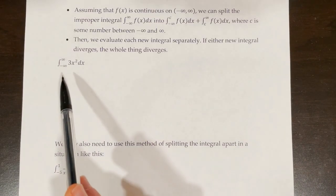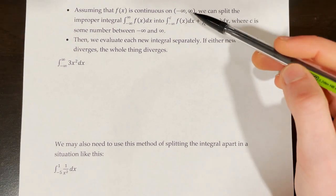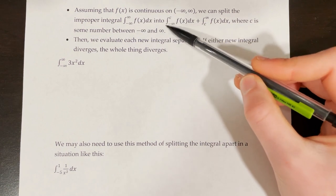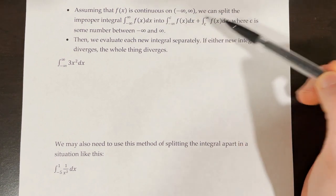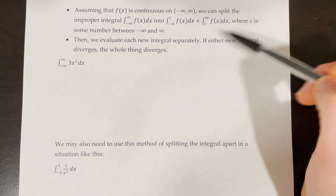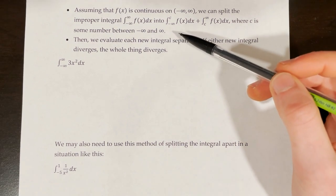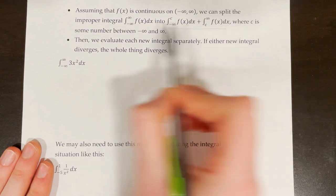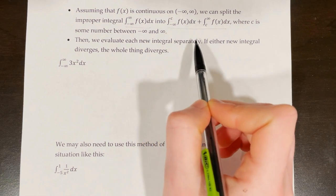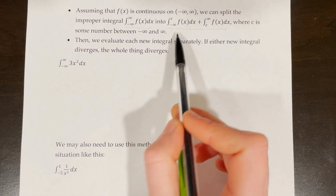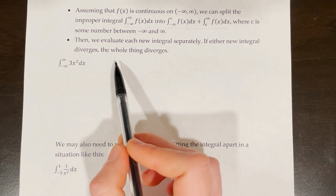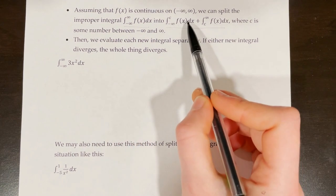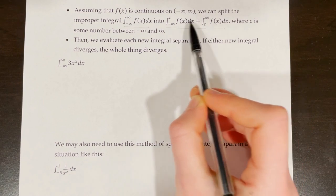Now we'll talk about what to do if both the lower bound and upper bound are infinite. Assuming f of x is continuous on negative infinity to infinity, we can split the improper integral from negative infinity to infinity of f of x dx into the integral from negative infinity to c plus the integral from c to infinity of f of x dx, where c is any constant — typically 0 or 1. We evaluate each new integral separately. If either of the new integrals diverges, then the whole thing diverges. If both give values, we add them together.